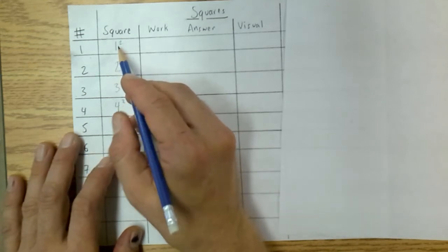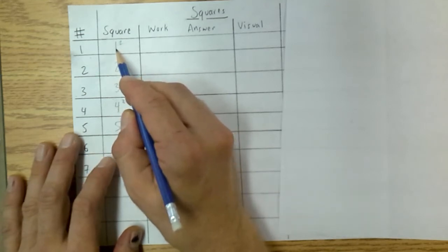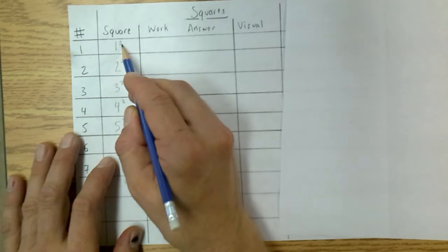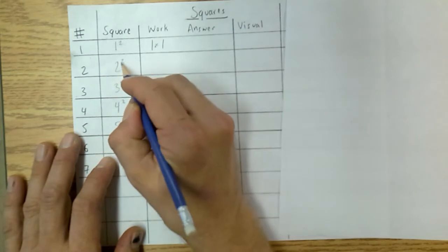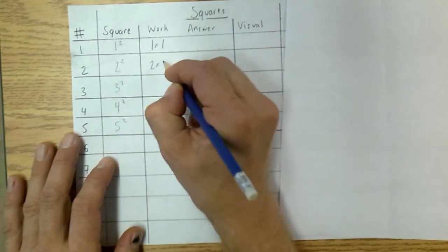Now what does that mean? That simply means that you are taking this number here, and you are multiplying it by itself that many times, 2 times. So 1 squared means we are doing 1 times 1. 2 squared means we are taking 2 and multiplying it by itself twice.